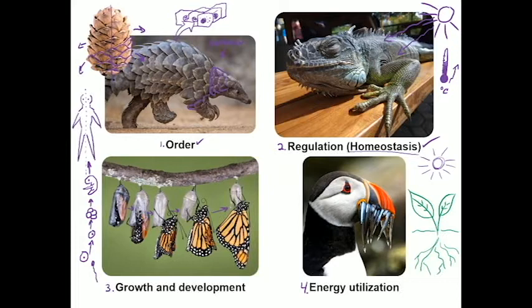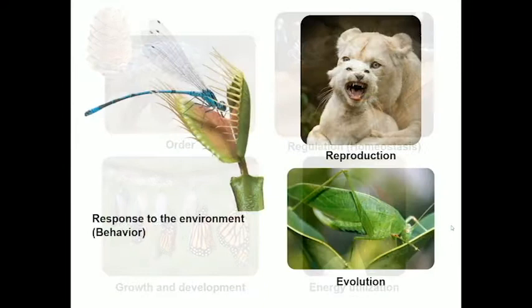Animals have to eat other organisms in order to survive. Those organisms don't have to be other animals like this puffin eating fish—you could be talking about herbivores eating plants. But animals can't do photosynthesis. They can't make energy from non-living sources. So energy utilization, one way or another, has to occur for us to consider something alive.